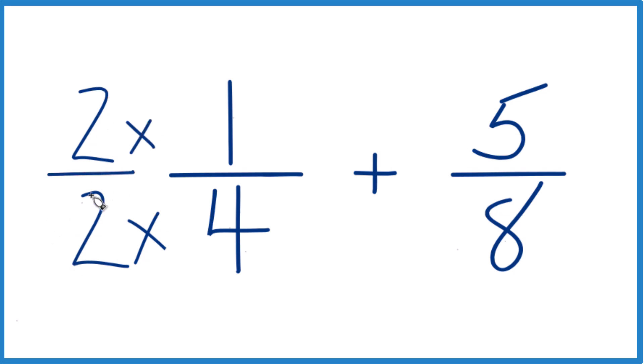That's because 2/2, 2 divided by 2 is 1. So we're just multiplying by 1, we don't really change anything.